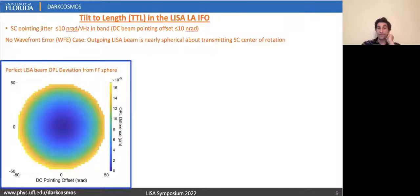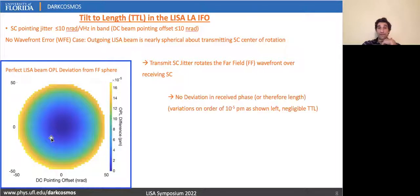First, going over where this noise comes from in LISA. LISA requirements limit spacecraft in-band jitter to 10 nanoradians, along with 10 nanoradians of DC pointing misalignment. The nominal LISA beam is a clipped Gaussian with no wavefront error, and so at the far field, we have a nearly spherical wavefront with length deviations between that wavefront and the actual sphere centered about the point at which the transmit spacecraft jitters, shown to be here on the order of 10^-5 picometers. And as the transmit spacecraft jitters and rotates the far field wavefront over the receiving spacecraft, no deviation in received phase is shown.